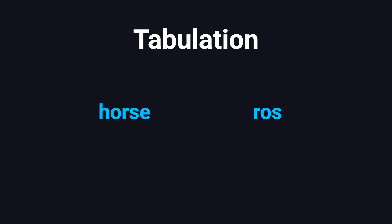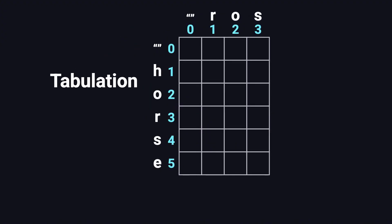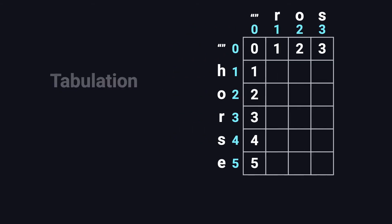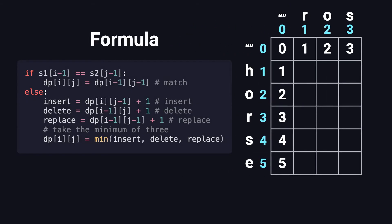Let's walk through how to use this table method to turn the string 'HORSE' into 'ROWS' using the fewest edits. First, we create a 2D grid — each row represents the first I characters of HORSE, and each column represents the first J characters of ROWS. The zeroth row and zeroth column handle cases involving empty strings. The zeroth row shows how many insertions we need to build up from an empty string, so we fill it with 0, 1, 2, 3. The zeroth column shows how many deletions we need to reduce down to an empty string, so that column gets 0, 1, 2, 3, 4, 5. Each cell at row I and column J represents the minimum number of operations needed to turn the first I characters of string A into the first J characters of string B.